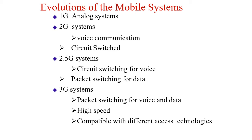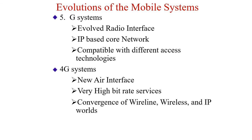By 2.5G, circuit switching was used for voice and packet switching for data. By third generation, packet switching for both voice and data was introduced. Speed improved and compatibility with different technologies also came into existence. 3.5G systems brought a new radio interface and an IP-based core network, along with compatibility with different access technologies.